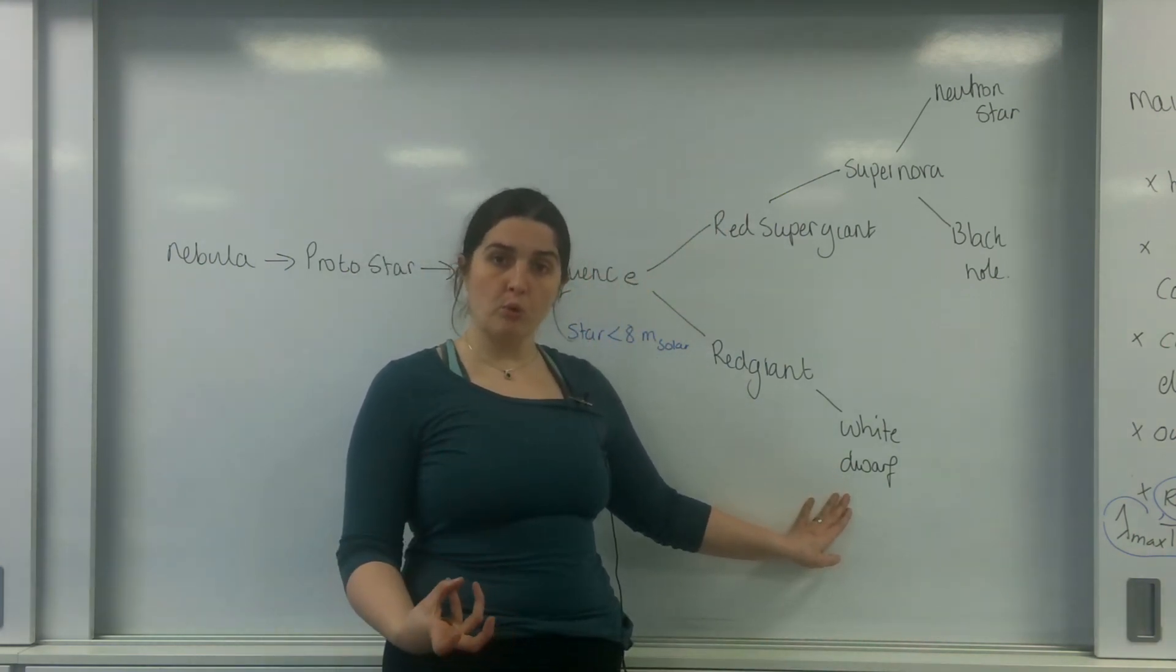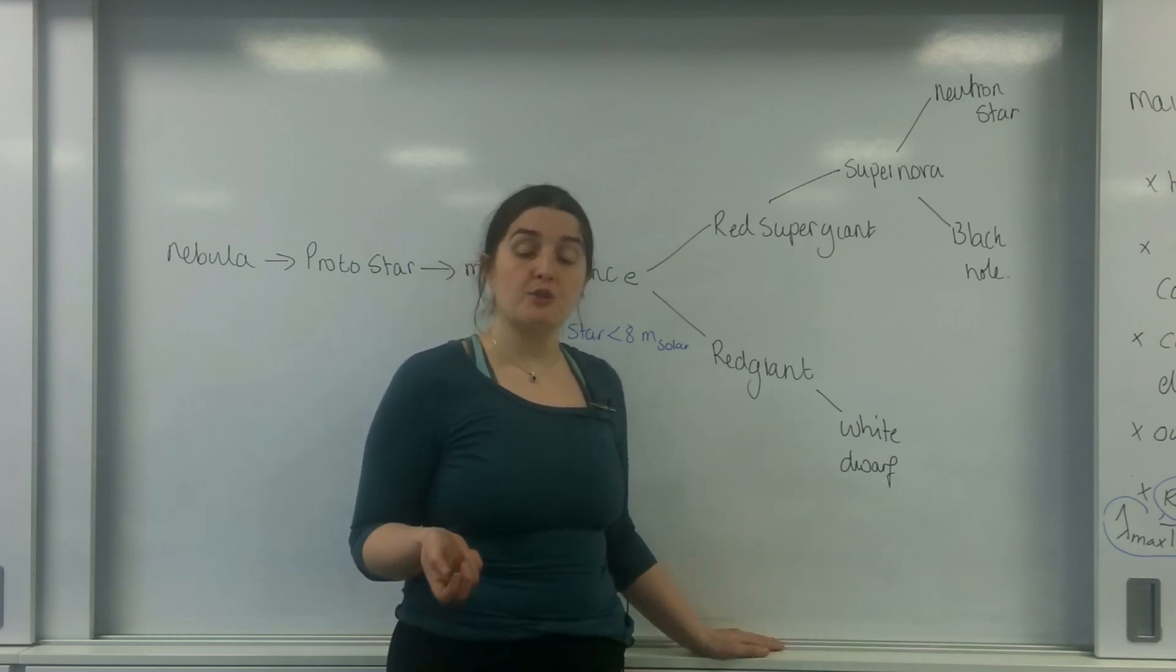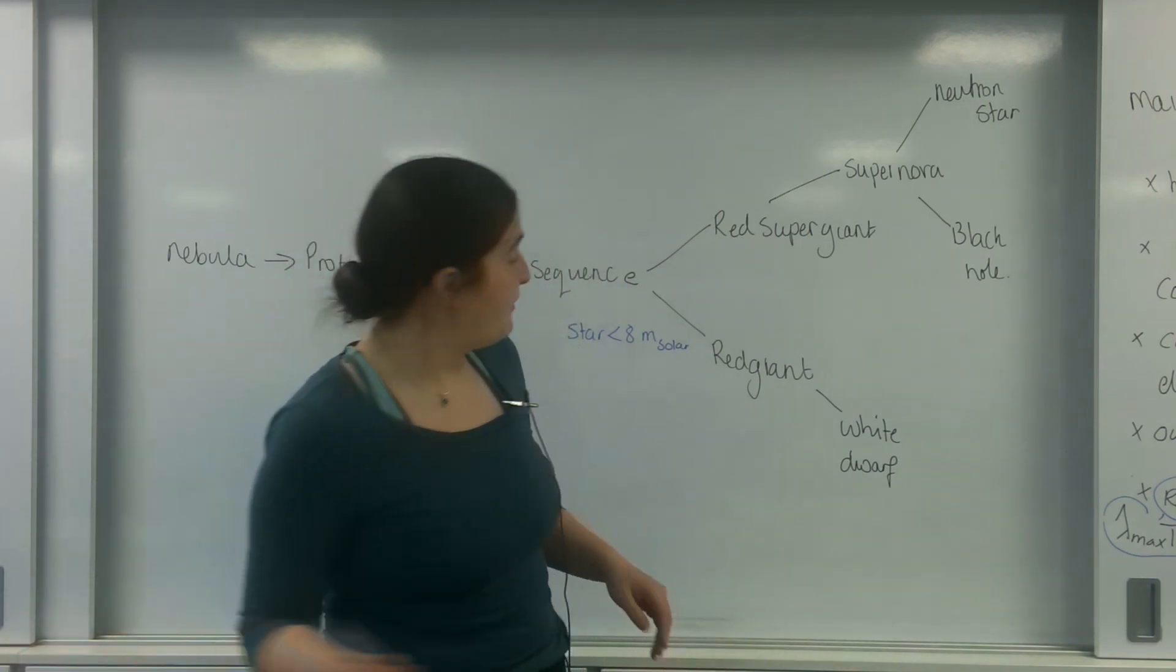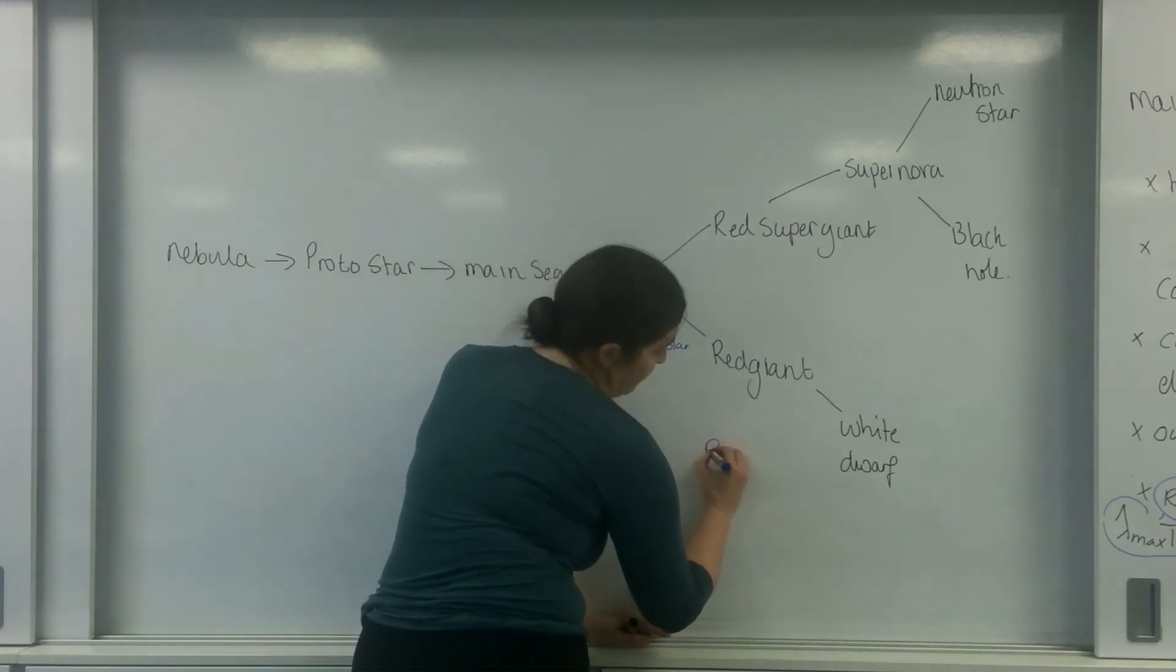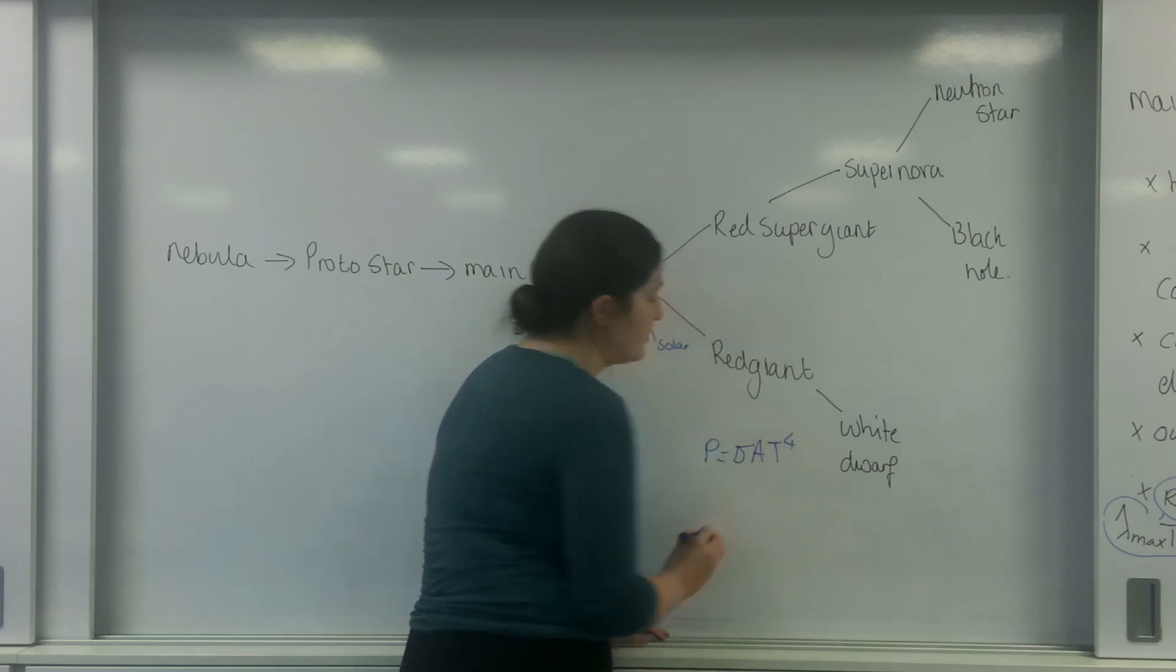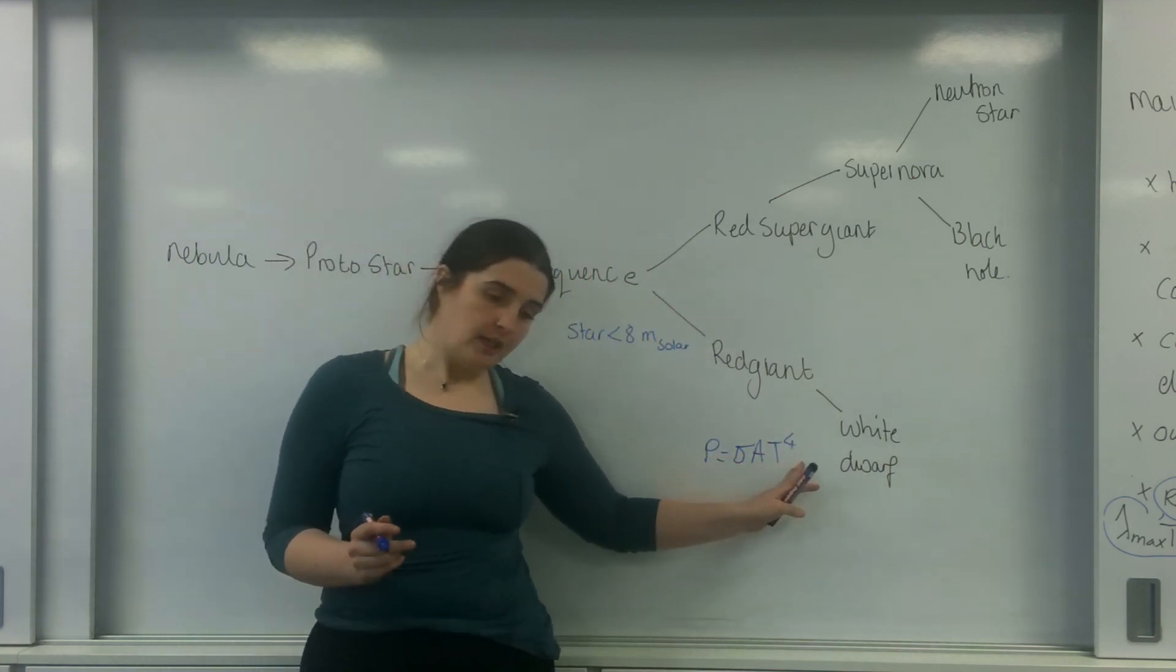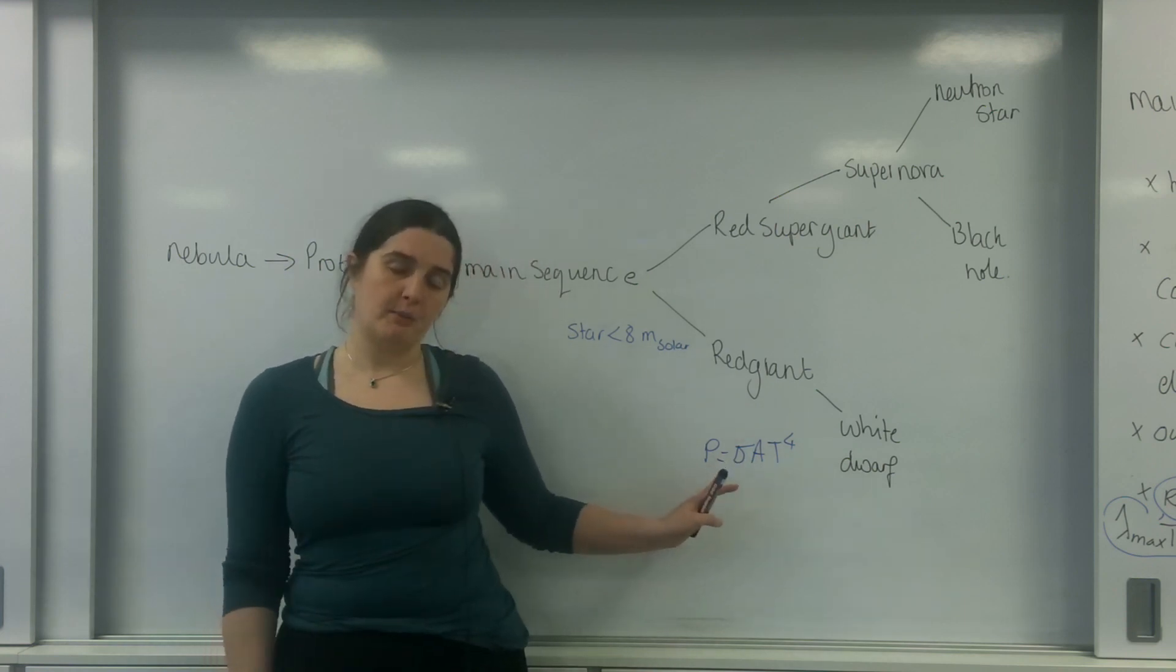So it's a small, hot object. Because it's so small, due to Stefan's law, which is power equals sigma A T to the four, because it is so small compared to its temperature change, the power it emits becomes less.